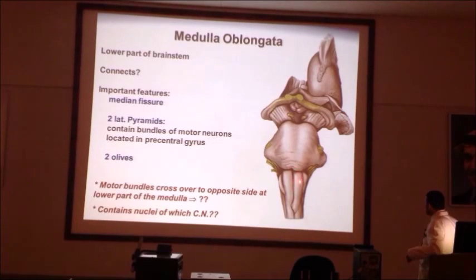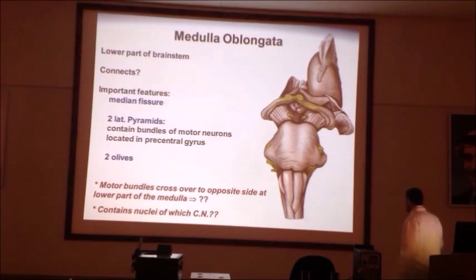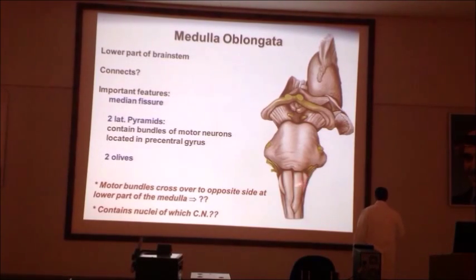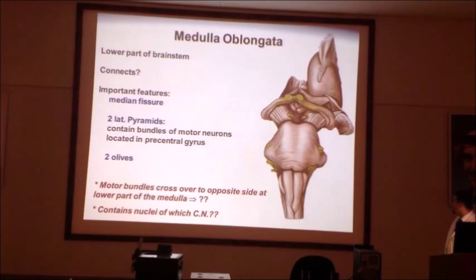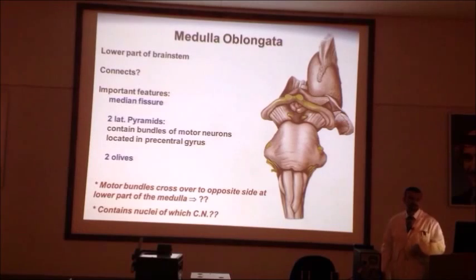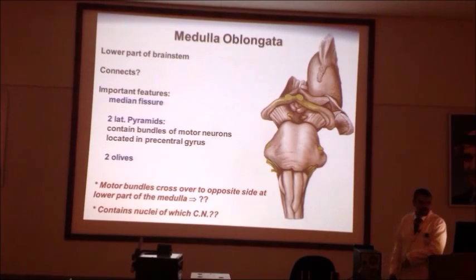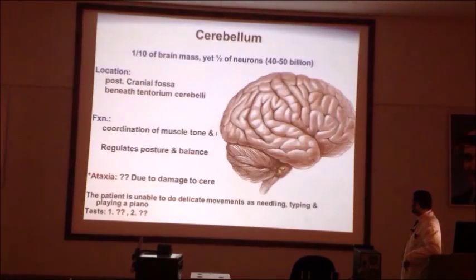On the lateral sides of the medulla are two elevations called the olives, which contain the inferior olivary nucleus — a very important center for motor coordination.